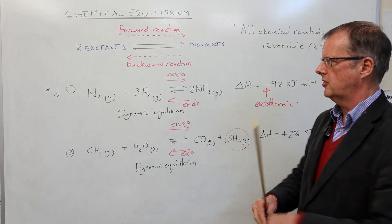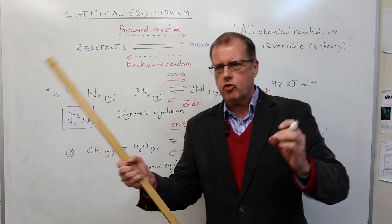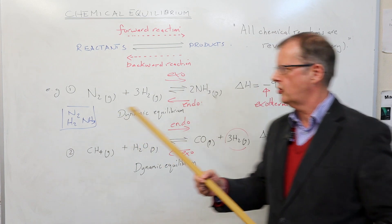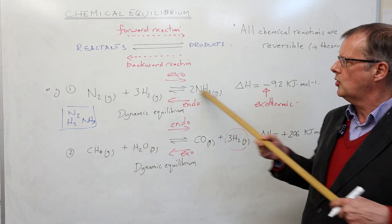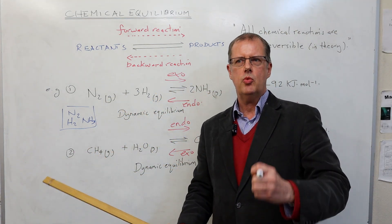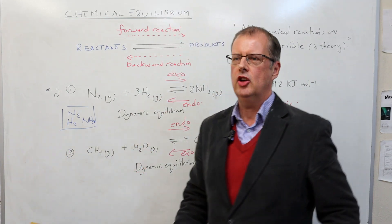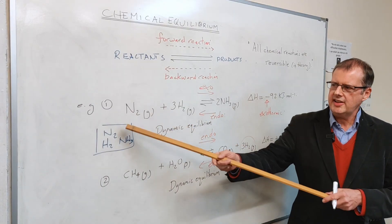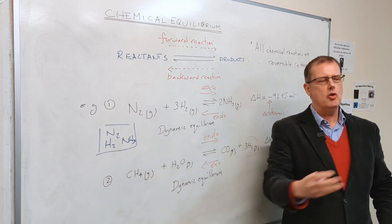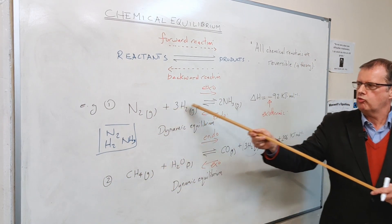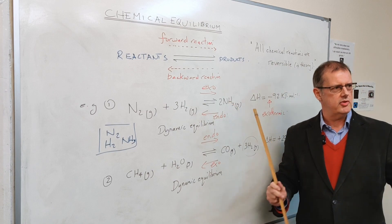There's also the effect of changing volume or pressure. Imagine the chemicals — nitrogen, hydrogen, ammonia — are in a box. If you increase the pressure, the system moves to try to reduce the pressure by shifting to the side with fewer molecules. In the Haber process equation there are four molecules on the left and two on the right, so increasing pressure moves equilibrium to the right, reducing the number of molecules and thus the pressure.